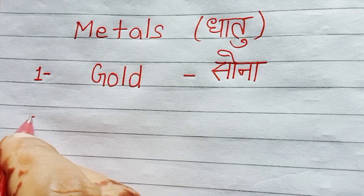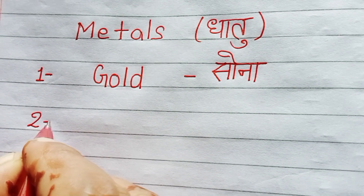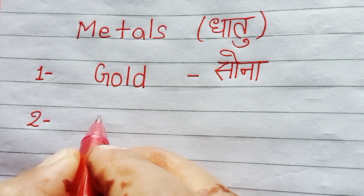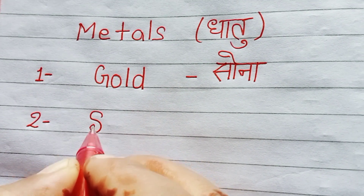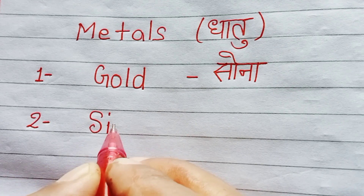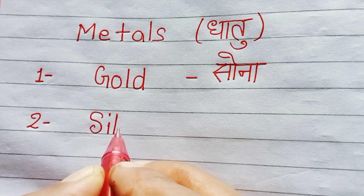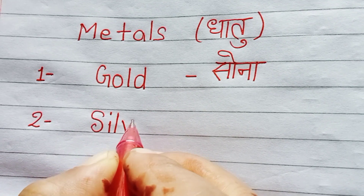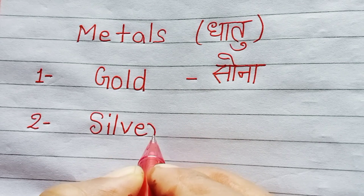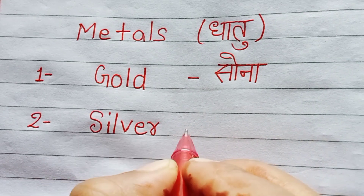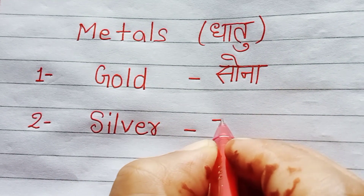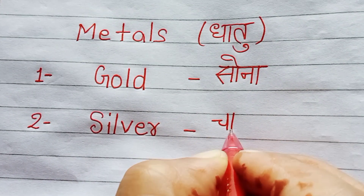2nd number is Silver. S, I, L, V, E, R. Silver. Silver means Chandi.